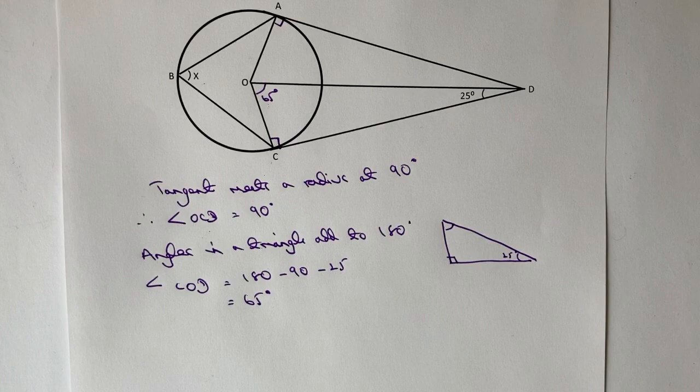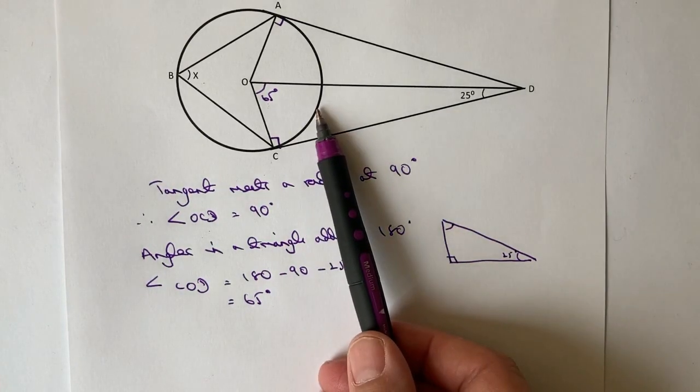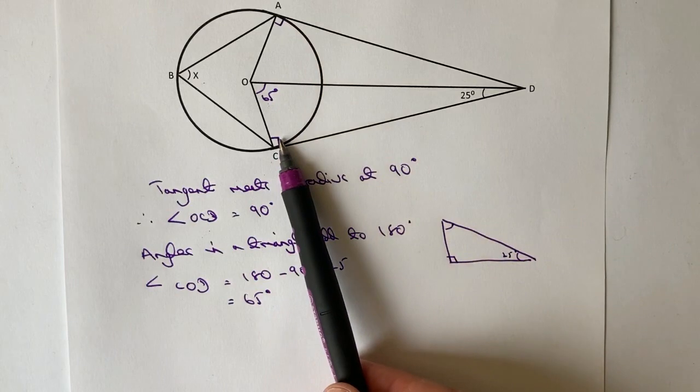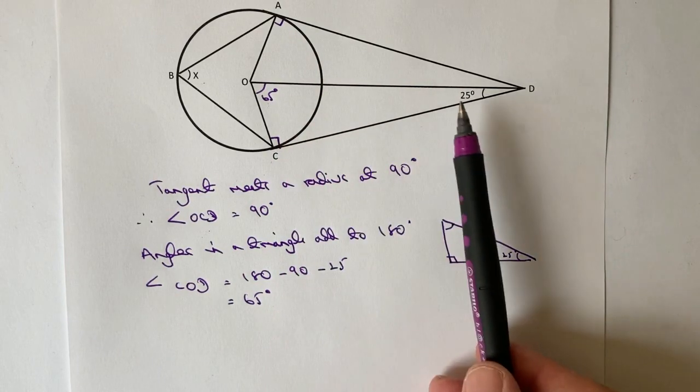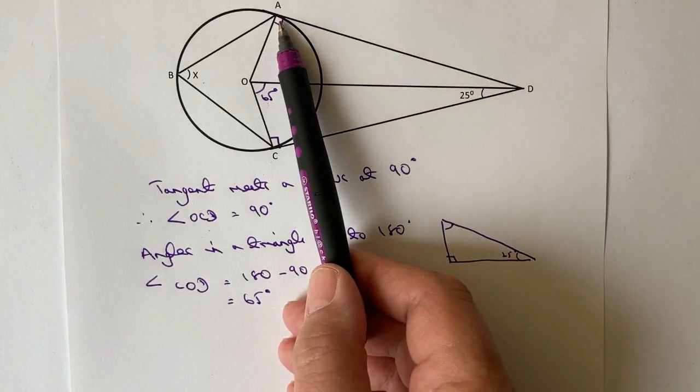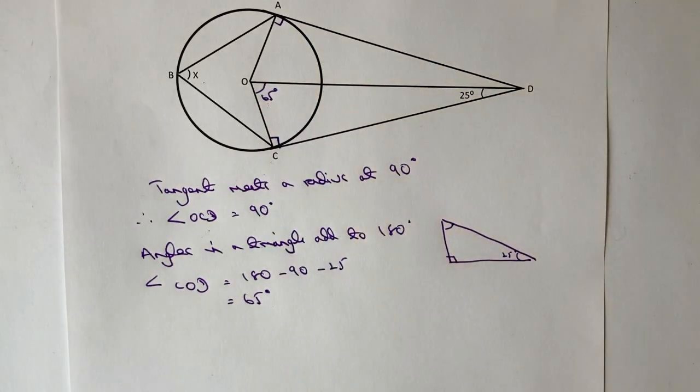And then another point that they might want us to say is that this triangle and this triangle are the same, they're congruent triangles, they're exactly the same, because both of them are made from tangents, so therefore they're both at 90 degrees. Okay, this angle here is on the midline, so therefore that's 25, that's 25, that's 90 and that's 65.